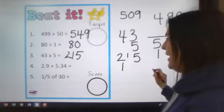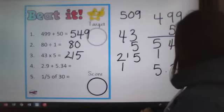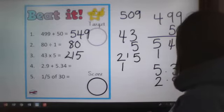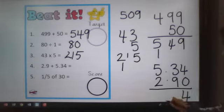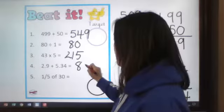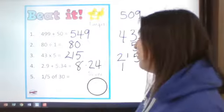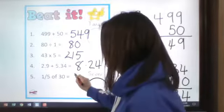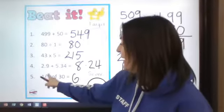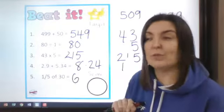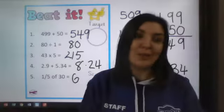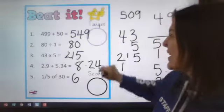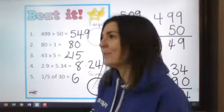Then you've got 2.9 add 5.34. Make sure that you lined up the decimal point - you might have put a 0 in to hold the place as well. So you should have 8.24 there. Then a fifth of 30 is 30 divided by 5, which is 6. Because we divide by the denominator - 30 divided by 5 is 6, multiplied by the numerator which is 1. So you should have 6 there. See how you did - you might have set yourself a target and see what your score was.